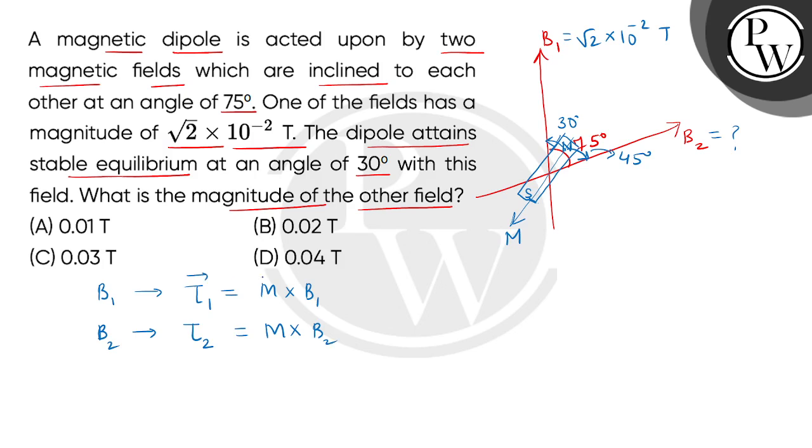We are dealing with cross products, vector quantities. Now the word used in the question is stable equilibrium. Because this dipole is in stable equilibrium, it means that the net torque on this magnetic dipole will be zero. So magnitude-wise, tau1 equals tau2.